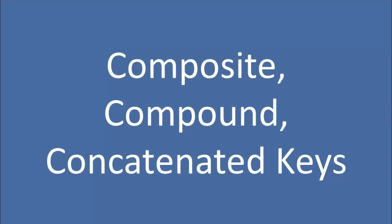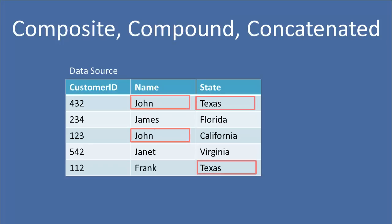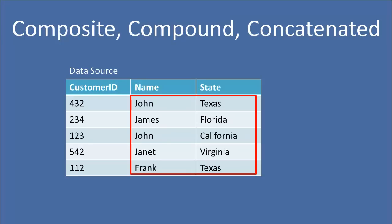Composite, compound, or concatenated keys — again, these are just synonyms. The meaning is that we're going to use more than one field to represent a key. So let's take a look at name: we couldn't use name as a candidate key because there are duplicates — John is listed twice. We also could not use state because Texas is listed twice. However, if we combine those into a composite key, we now do have a candidate key.